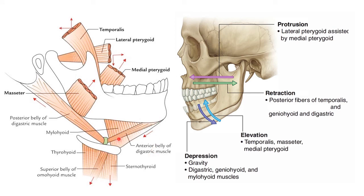The digastric, geniohyoid, and mylohyoid are collectively called the suprahyoid muscles — muscles above the hyoid bone. Side-to-side movement is carried out by the medial and lateral pterygoid muscles on one side and the opposite side alternately. These are all the movements occurring at the temporomandibular joint and the muscles causing them.